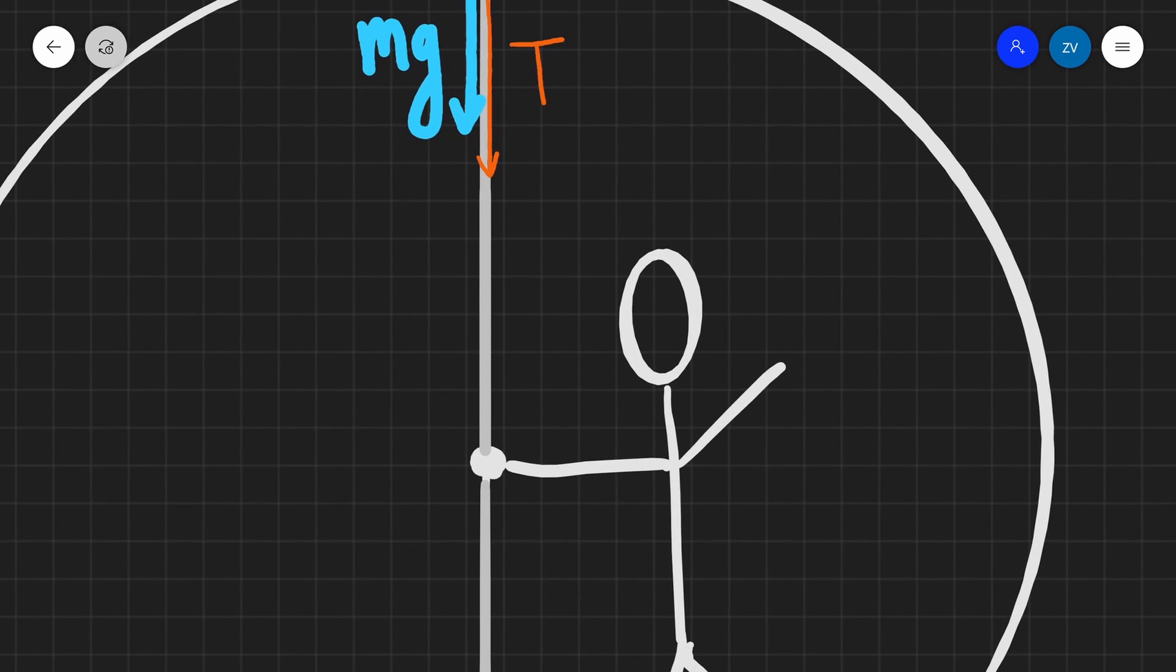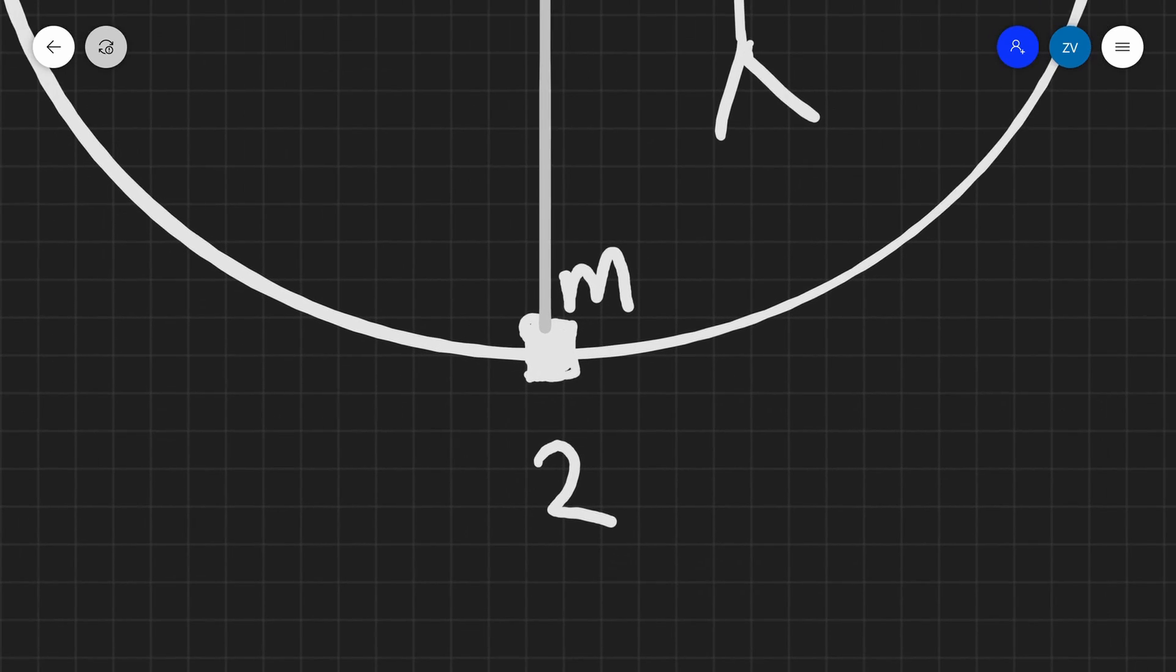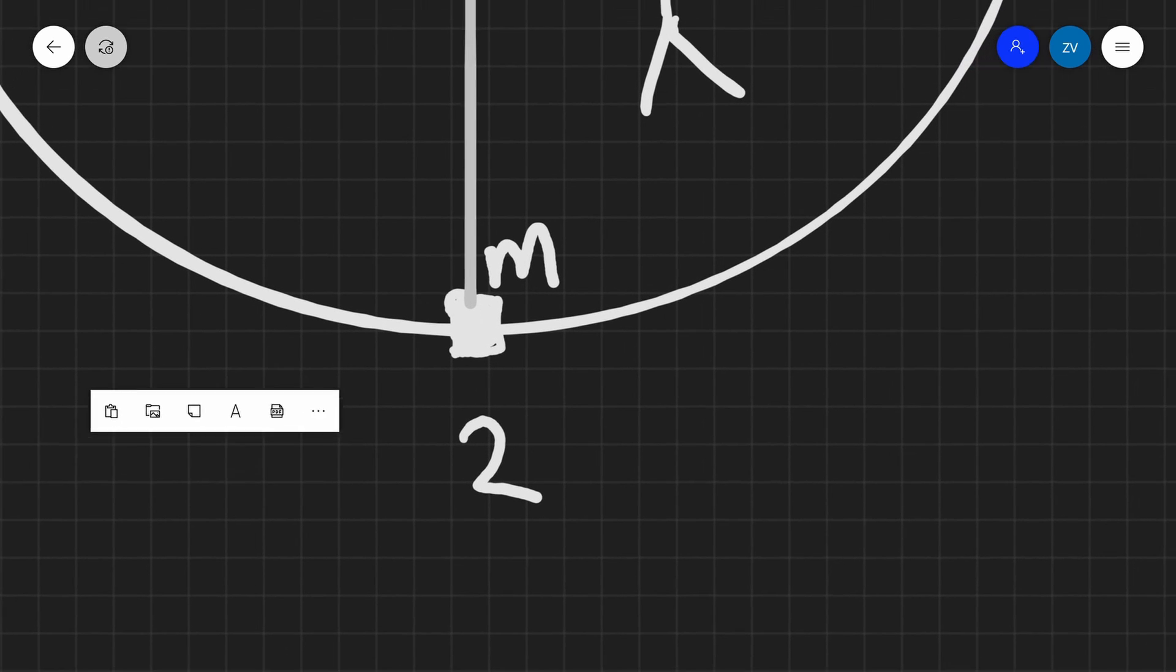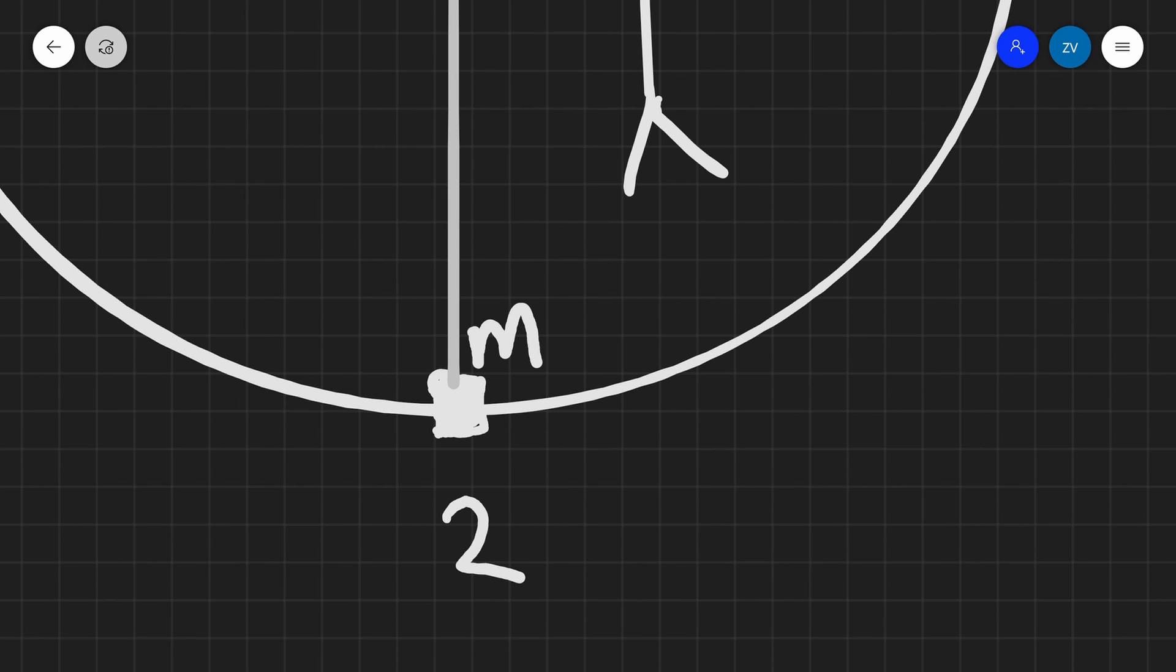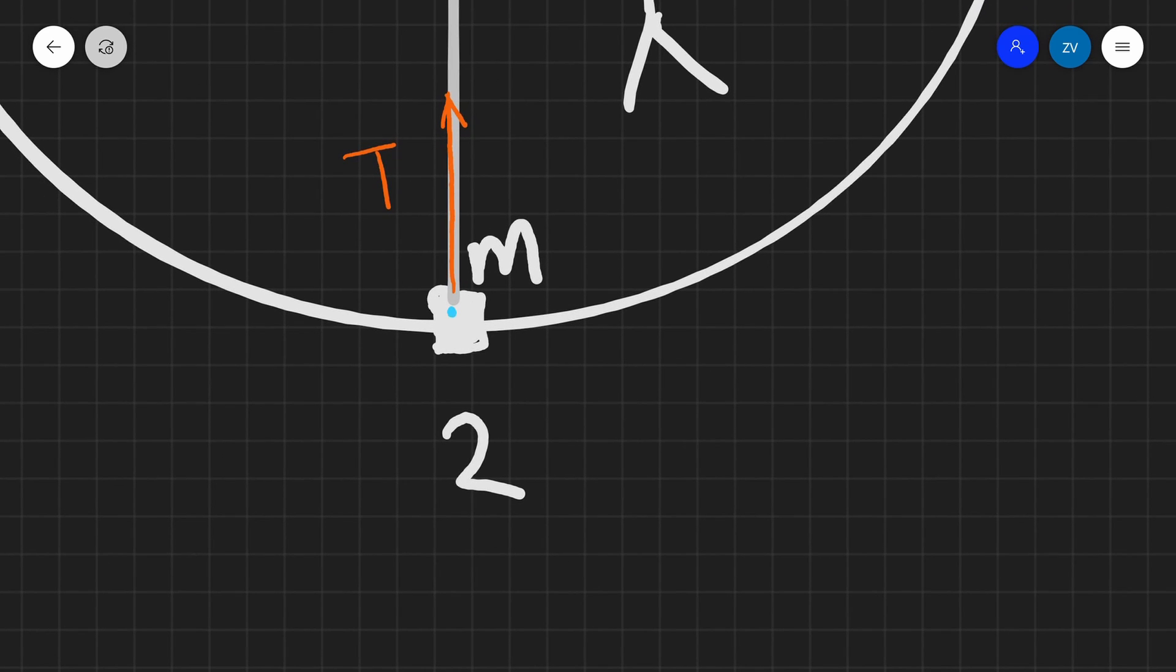Now, if we move down to position two, over here, notice that there's going to be some differences. First of all, the tension will once again be acting along the direction of the string. So in this case, this is going to be upwards. So the tension will be along here. We can label that as T. But now the weight is going to be acting straight down, which is in the opposite direction. So the weight, let's call that mg. Along here is going to be mg.